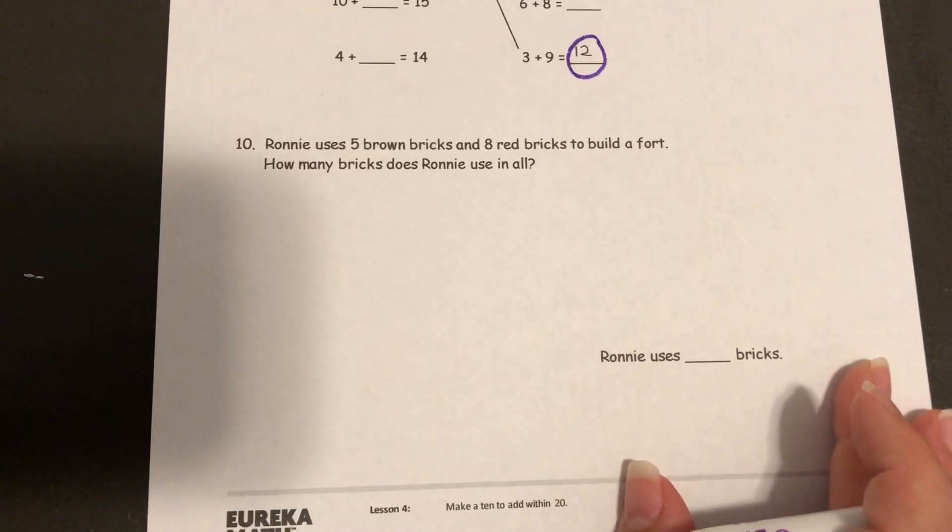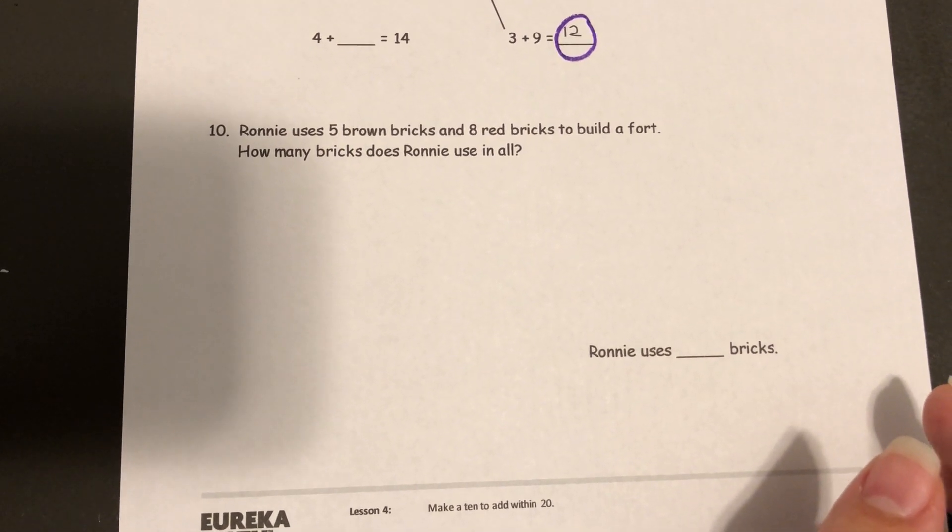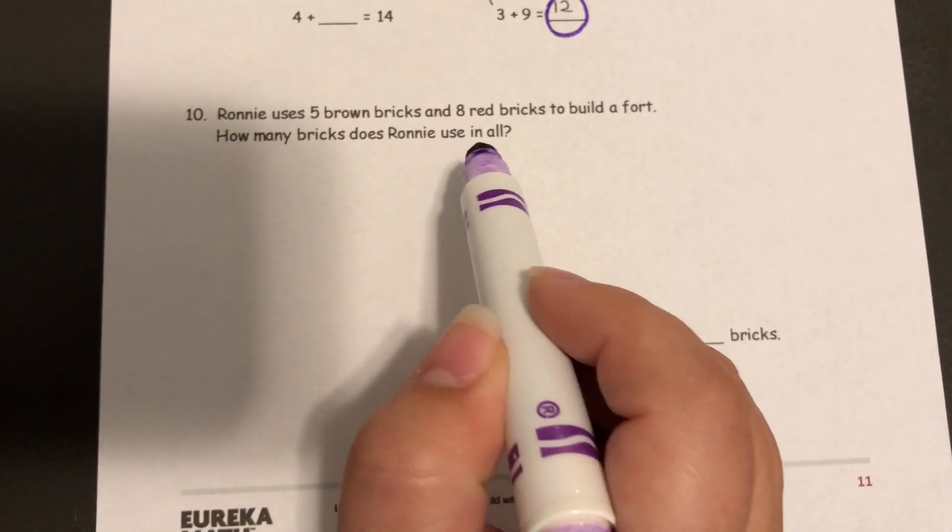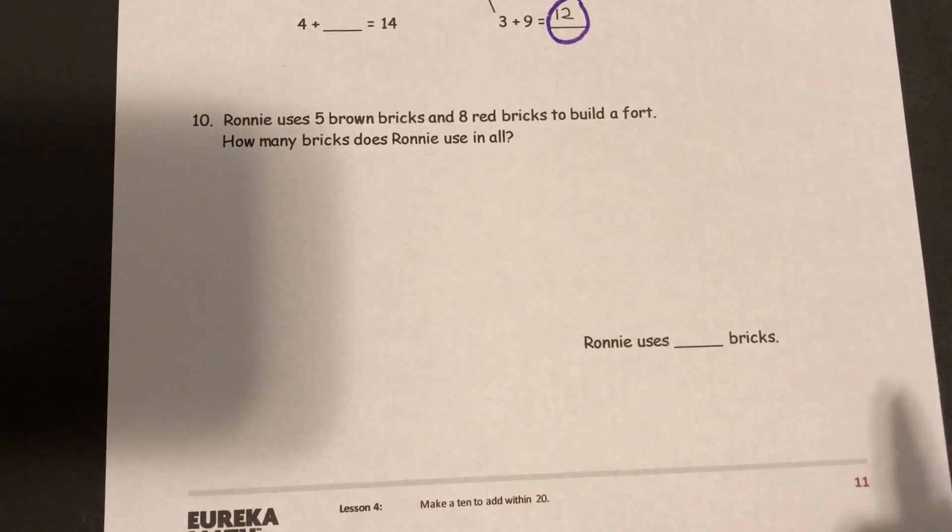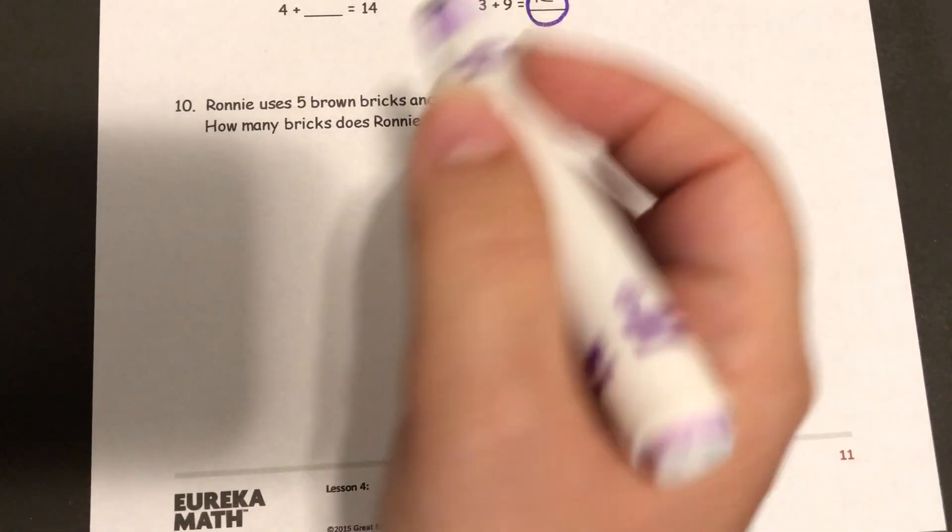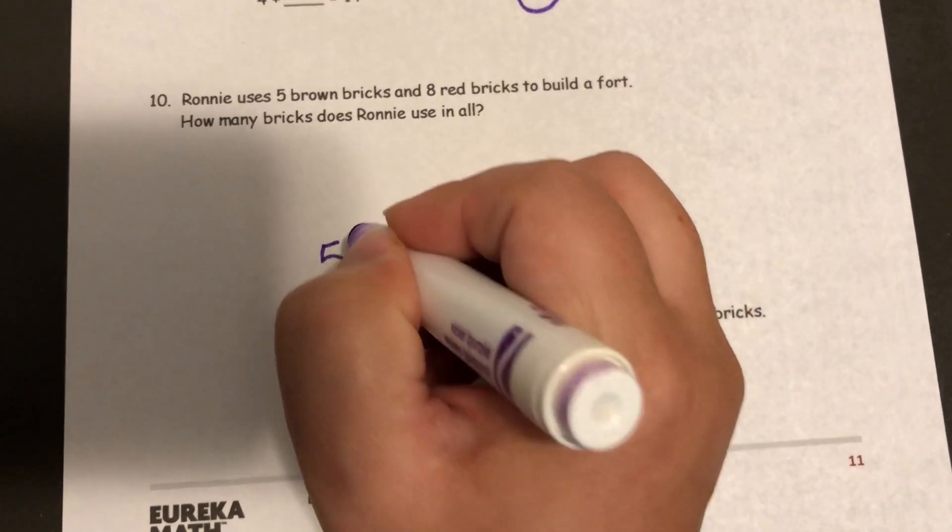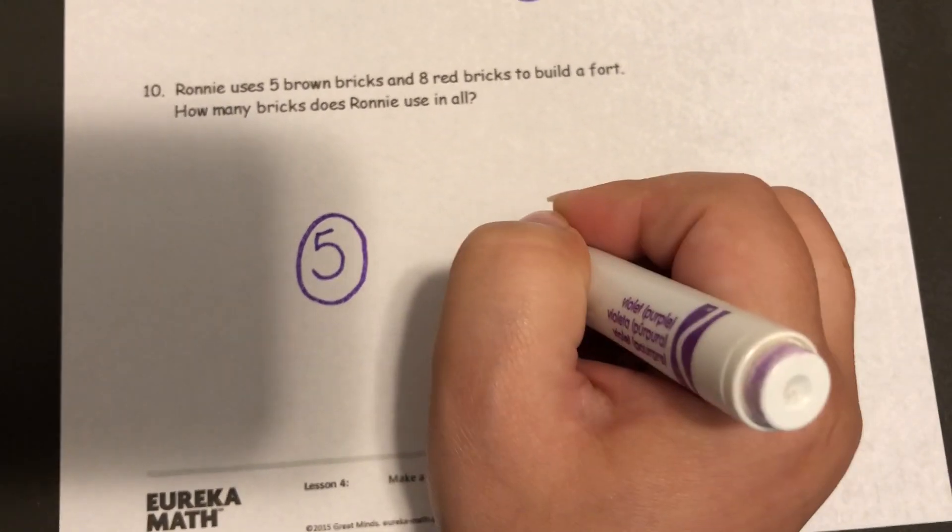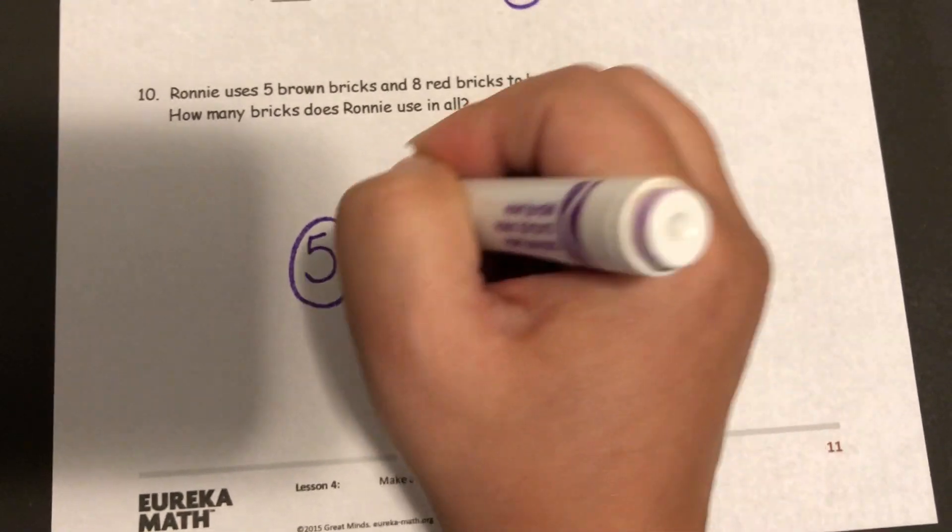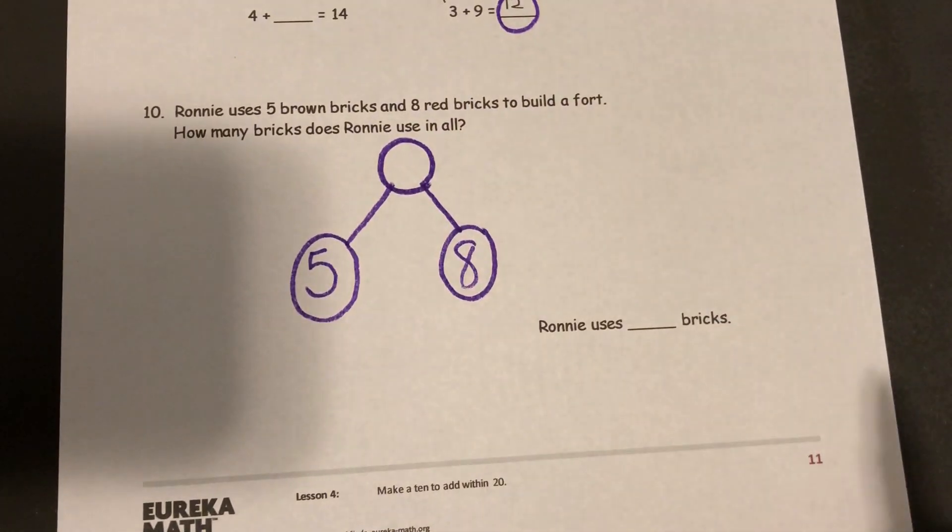And for the last one, it says Ronnie uses 5 brown bricks and 8 red bricks to build a fort. How many bricks does Ronnie use in all? So it's giving us 2 parts. We know that one of the parts is a 5 and the other part is an 8, and it is your job to figure out what the whole is.